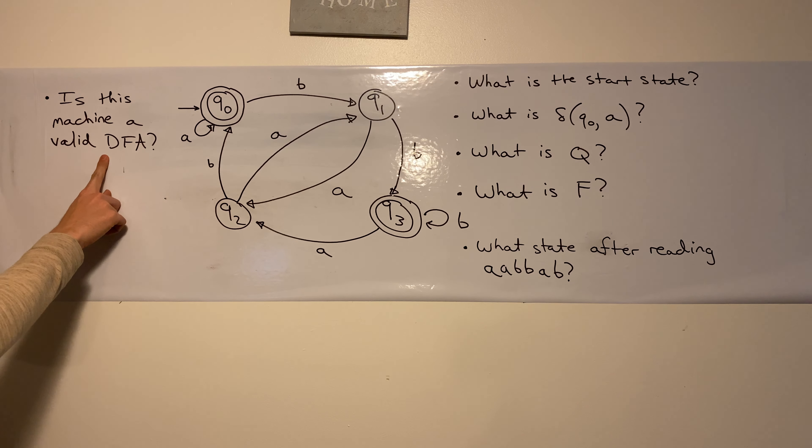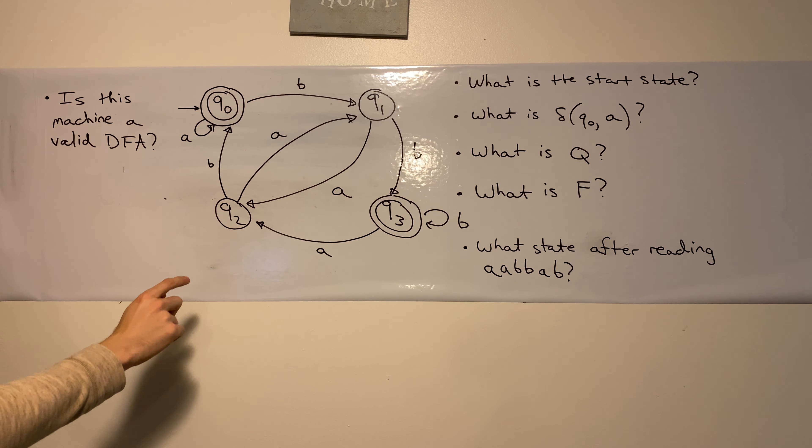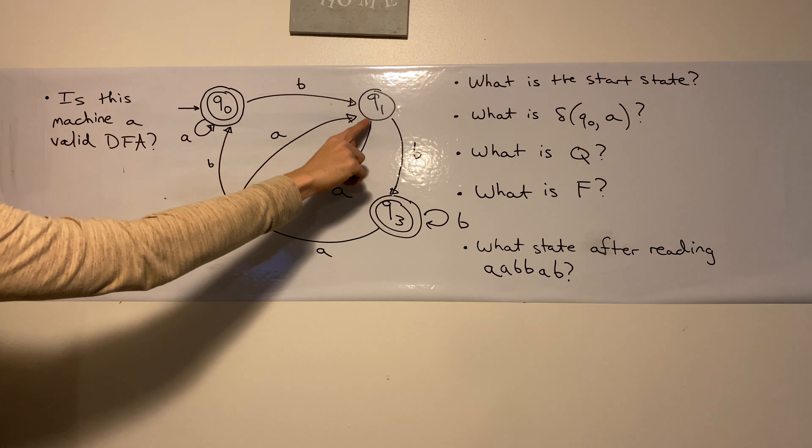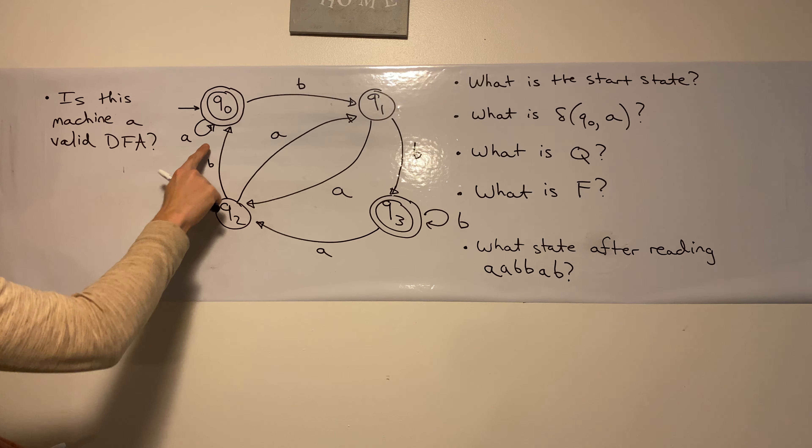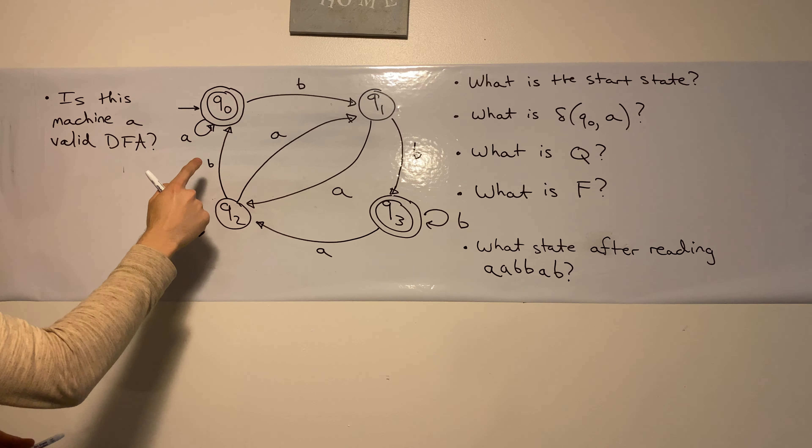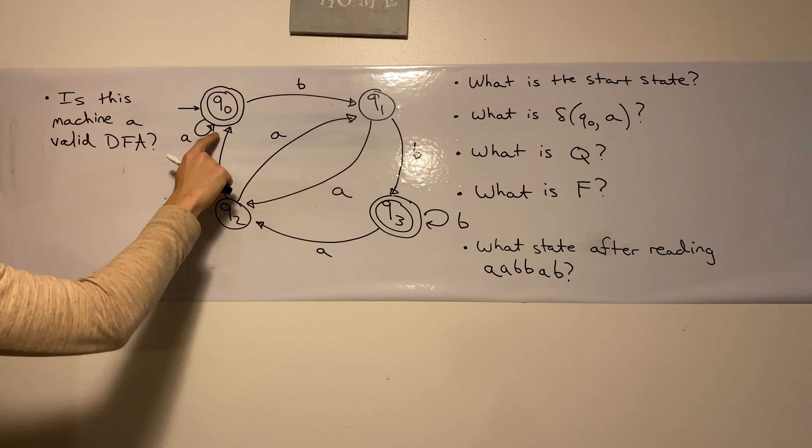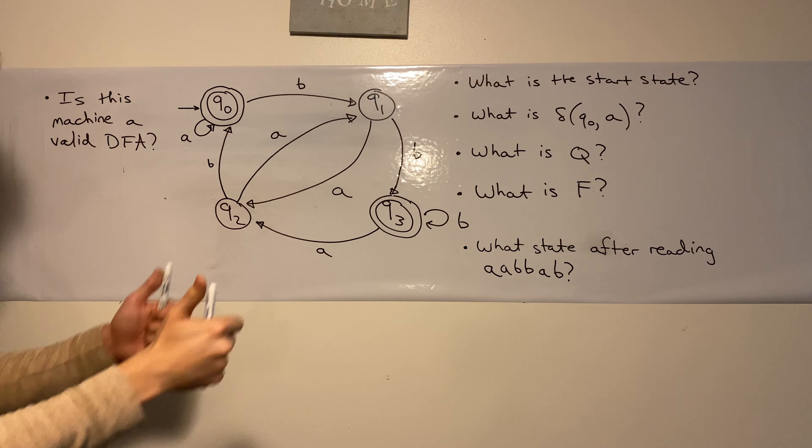So the first question is, is this machine a valid DFA? Well, let's look at it. To be a DFA, what we need is that every single one of the states has a transition on each of the input characters. So let's see, does the DFA have a transition on each of the valid input characters? Let's see, Q0 has a transition, a self-loop on input A, has a transition on B, so Q0 looks good.